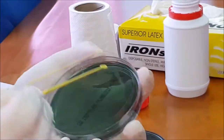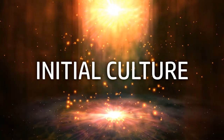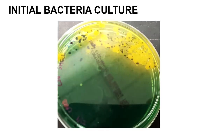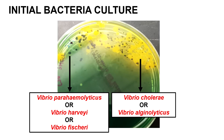In this video we will be showing you the results of the bacteria culture. This photo of the agar plate was taken 24 hours after the plate was incubated at 37 degrees Celsius — this is known as the initial culture stage, whereby all strains of Vibrio bacteria will grow. From the color and morphology of the bacterial colonies you can tell which strain is growing. For example, the large yellow colonies are either Vibrio cholerae or Vibrio alginolyticus, as both show very similar colony morphology. The dark blue-greenish colonies would be either Vibrio parahaemolyticus, Vibrio harveyi, or Vibrio fischeri.